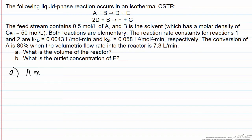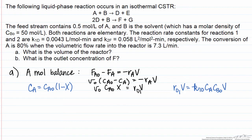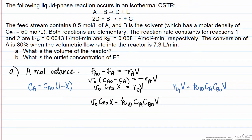We'll approach this problem by writing a material balance for A, shown here for a CSTR reactor. We can do a change of variables and write this in terms of volumetric flow rates and concentrations, and furthermore express the change in concentration as conversion — that change in concentration is the definition of conversion times CA0. That equals the rate constant times the concentration of A times the concentration of B, times the volume, since this is an elementary reaction.